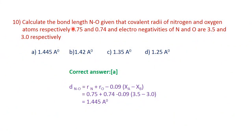Question 10: Calculate the bond length of NO, given that the covalent radii of nitrogen and oxygen are 0.75 and 0.74 Angstroms respectively, and the electronegativities of nitrogen and oxygen are 3.5 and 3.0 respectively. The bond length of NO equals R_N plus R_O minus 0.09 × (XA minus XB). Substituting the values, we get 1.445 Angstrom units. The covalent radius of the NO bond is equal to 1.445 Angstrom units.